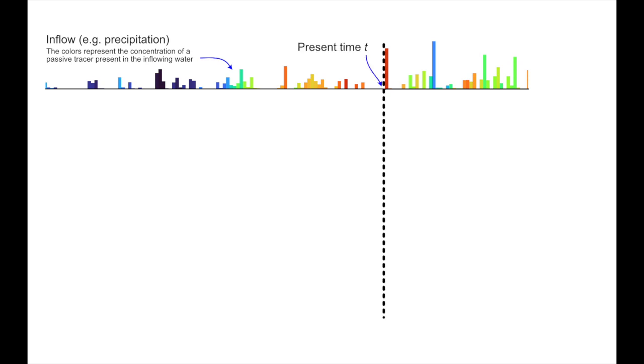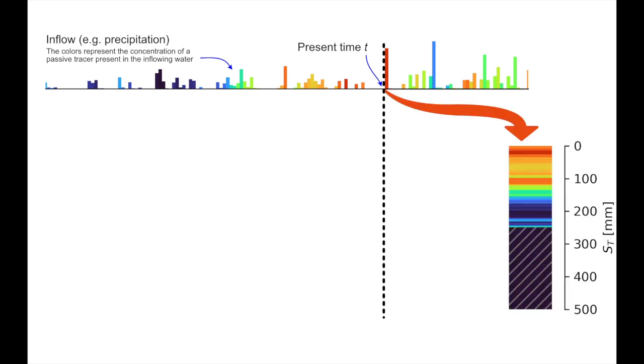At some moment in time, represented by this dashed line, the water to the left of the line has already entered the system, and some part of it is in storage. SAS theory allows us to keep track of how much of that water is still in the system. Imagine all the water in the storage stacked into a column like this, with the oldest water at the bottom and the youngest water at the top.